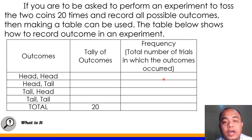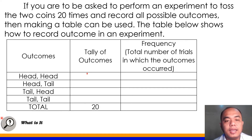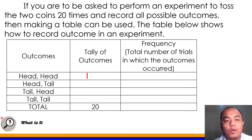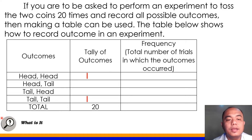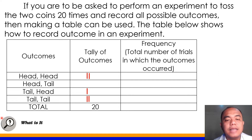Yung frequency class ay yung total number of trials in which the outcomes occur. Now, if you toss two coins, for example ang lumabas ay head and head — dalawang head ang lumabas — you make a tally. One tally for head and head. Next, another toss, then ang lumabas ay tail and tail — record that one. And also, next is tail and head ang lumabas — record mo din yan. And so on and so forth. Let me show to you a sample tally of outcomes in a certain experiment. Itali mo lang yung mga result when you are tossing two coins — again, that would be 20 times.